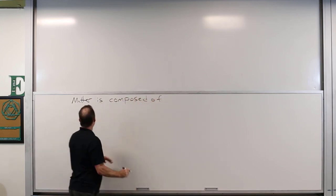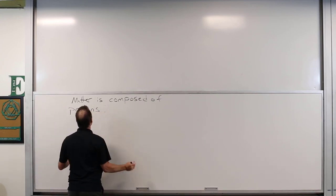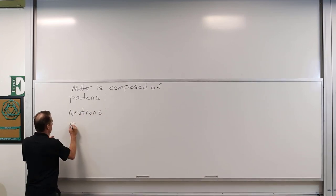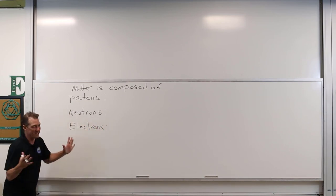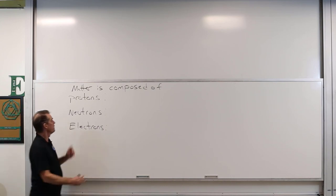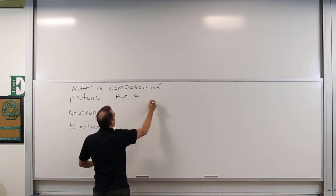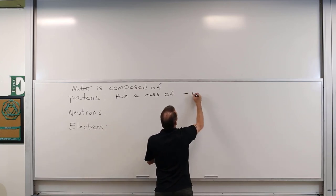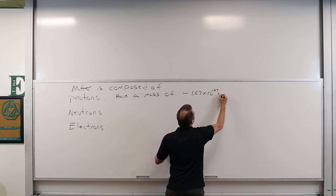Matter is composed of protons, neutrons, and electrons — non-exotic, run-of-the-mill matter. Protons have a mass of approximately 1.67 × 10⁻²⁷ kilograms and a charge of +1.602 × 10⁻¹⁹ coulombs. Coulombs is the SI unit of charge, and this is the quantity of charge for a proton — positively charged.